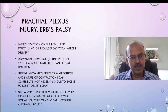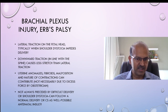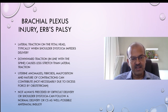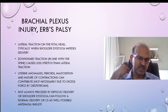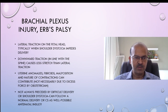Uterine anomalies, fibroids, malposition, and the nature of contractions can contribute. It's not necessarily due to excess force by the obstetrician — it can be due to the way the baby is coming out or other factors. It's not always preceded by difficult delivery or shoulder dystocia. It can follow a normal delivery or caesarean section, and sometimes antenatal insults are possible as well — for example, prominences pressing on the neck of the baby or stretching due to position.